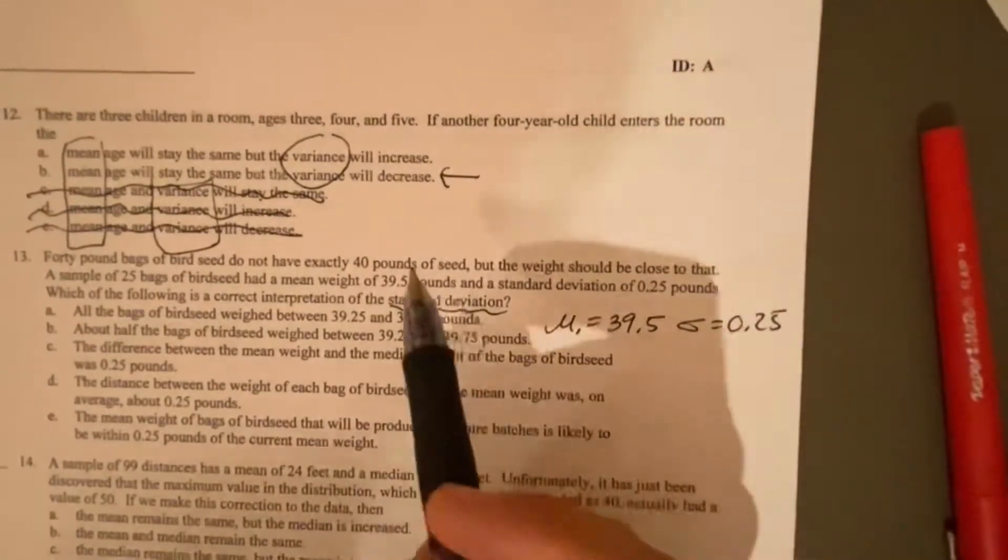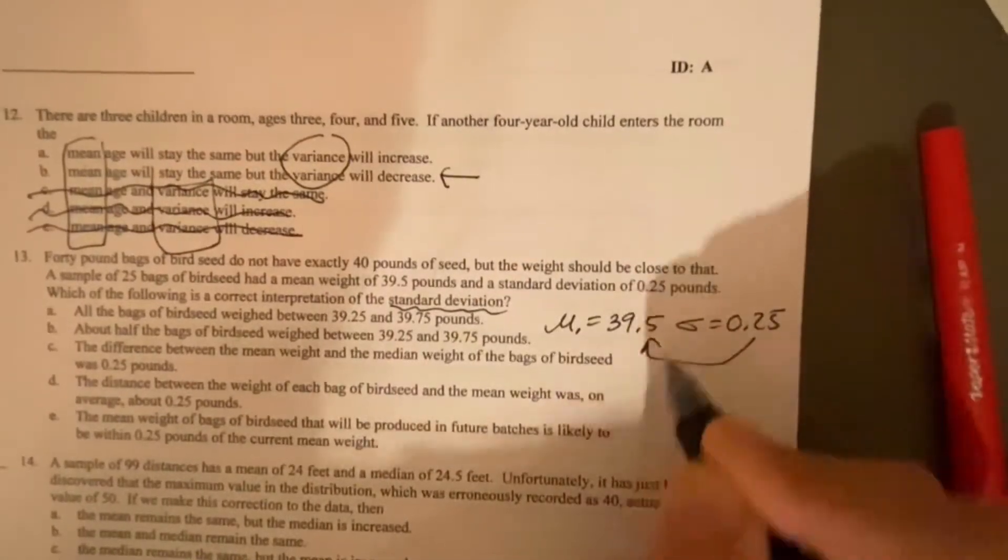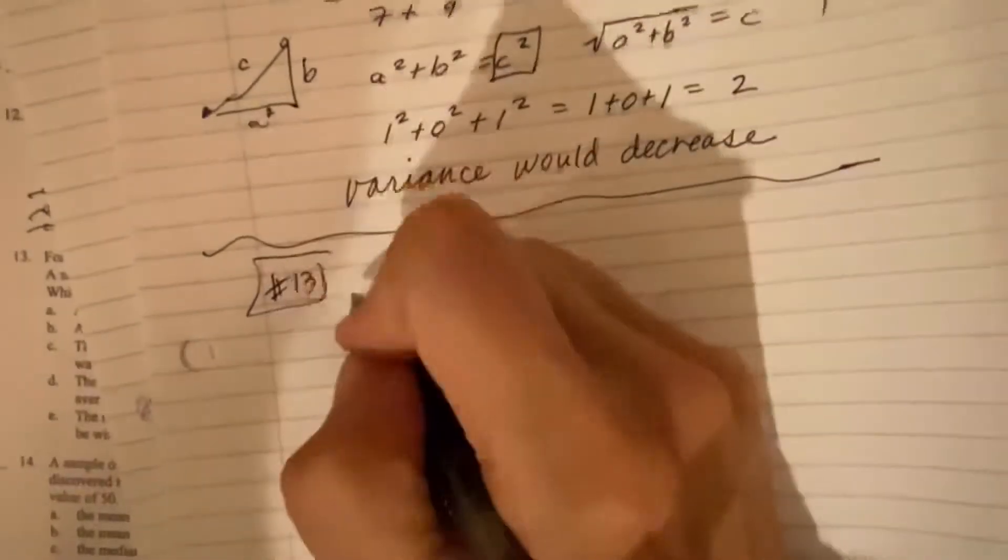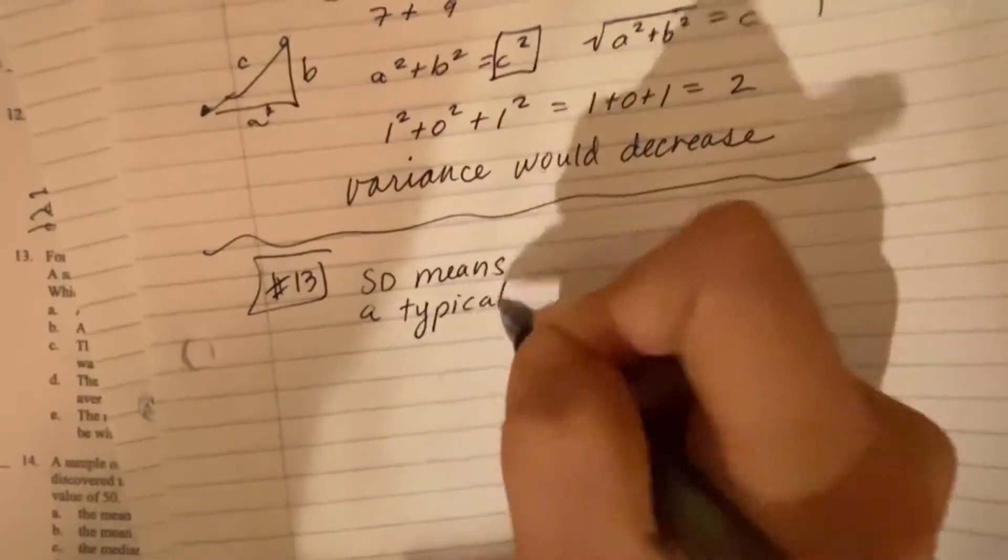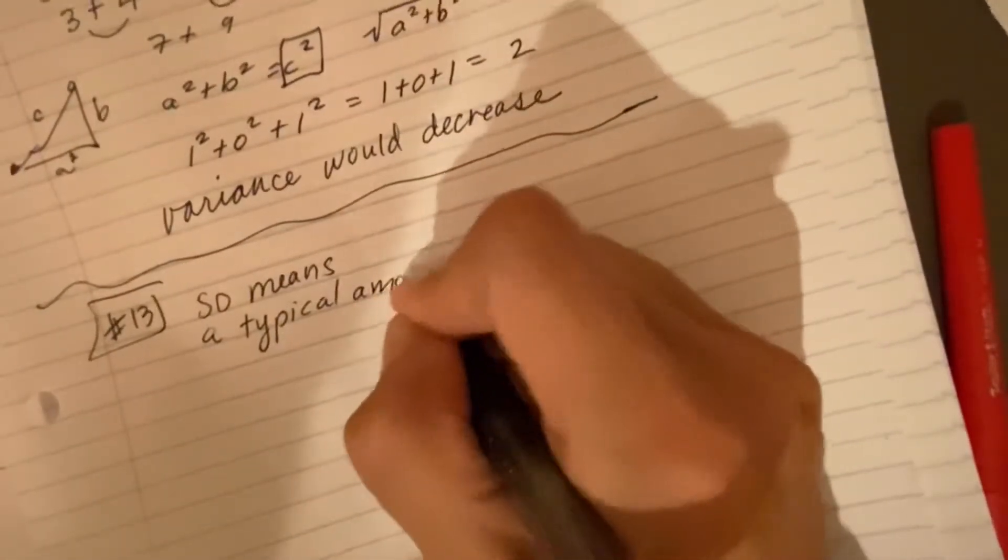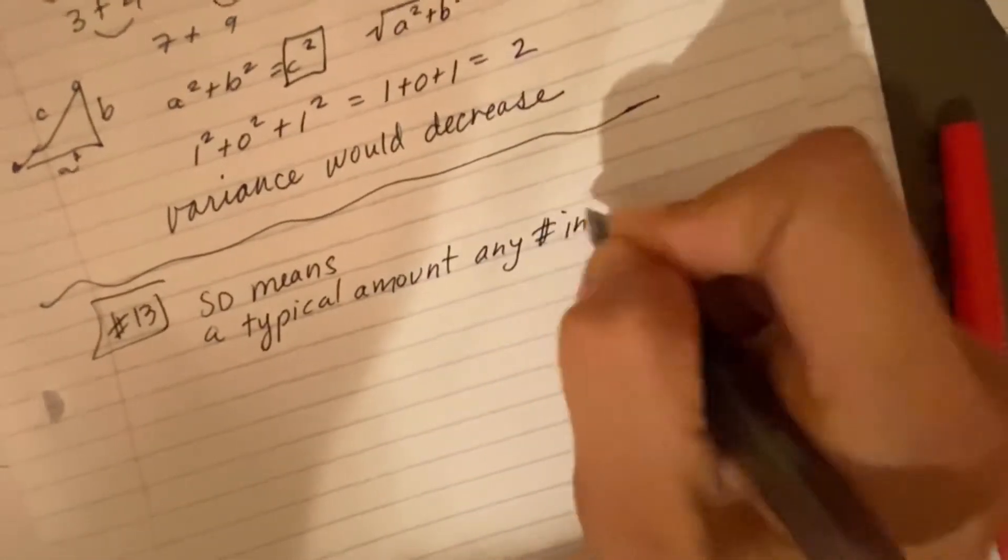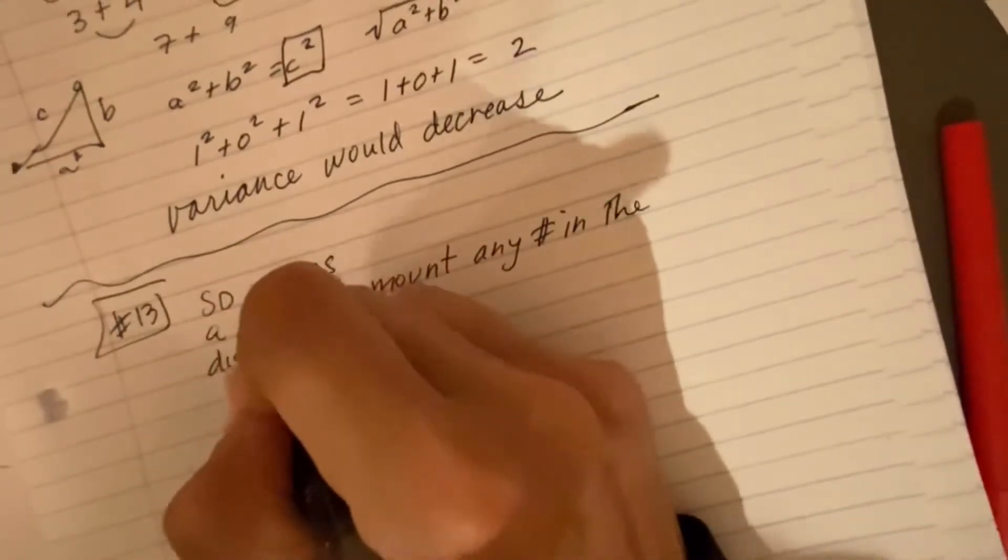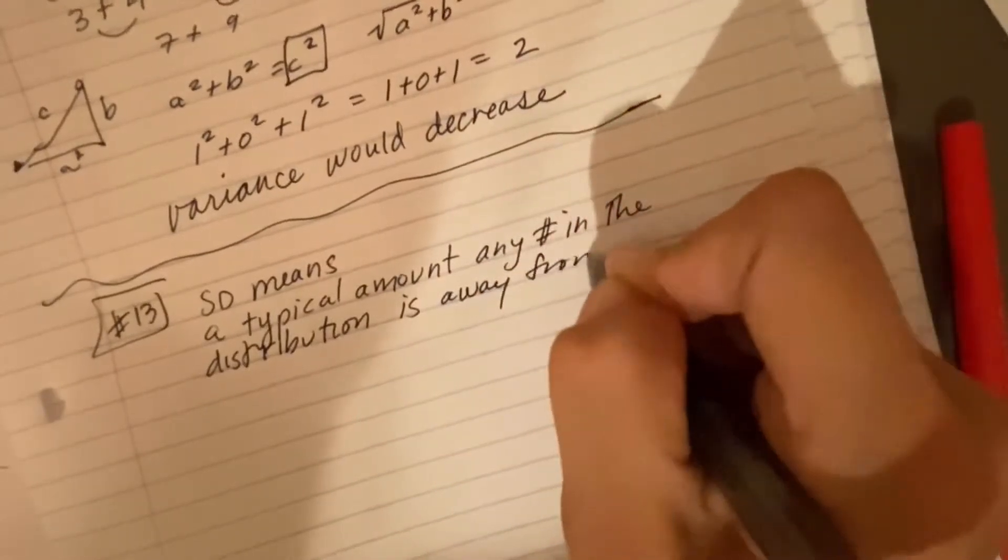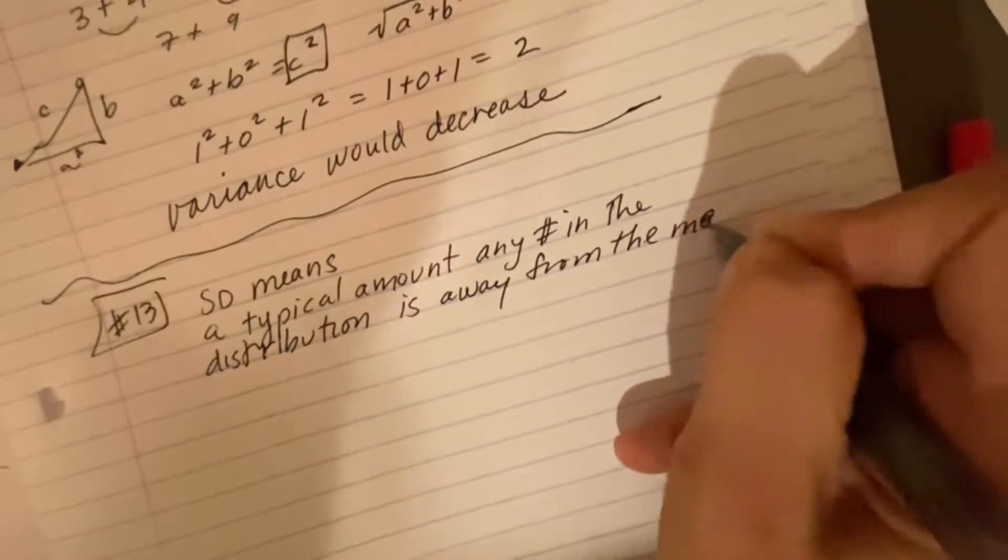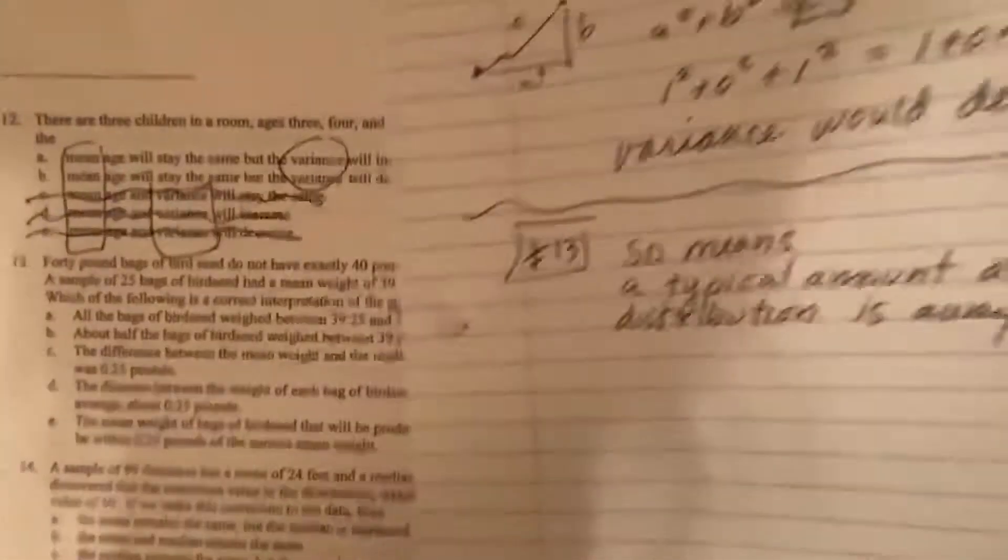So as we said in the last question, standard deviation means a typical amount that any given number is away from the mean. Let's write that down. Standard deviation means a typical amount that any number in the distribution is away from the mean. So it's an average amount that a number is away from the mean average. It's like an average of an average. Pretty cool.